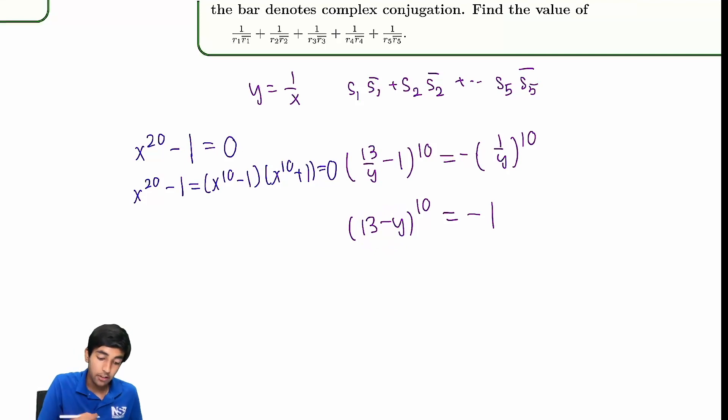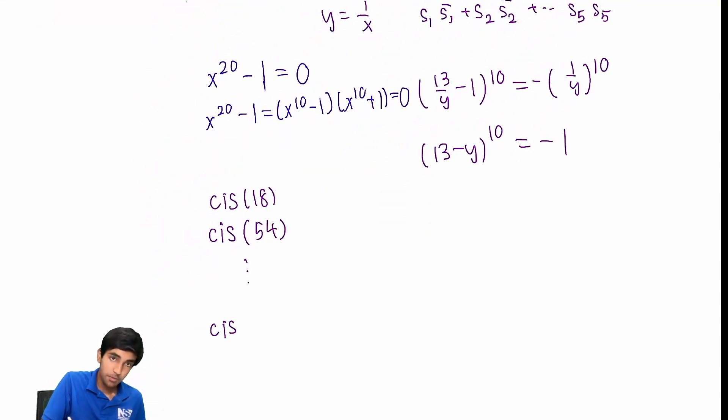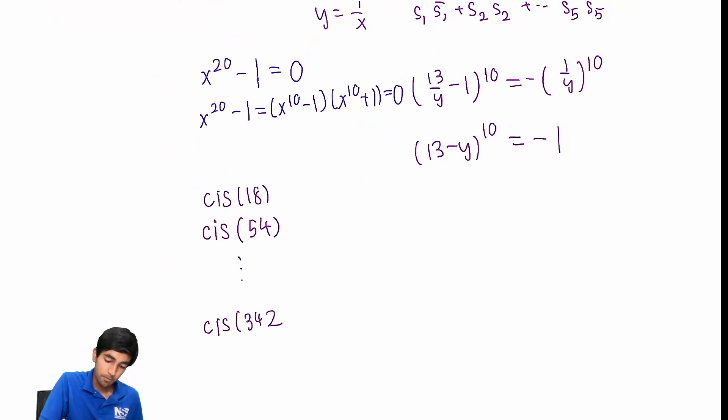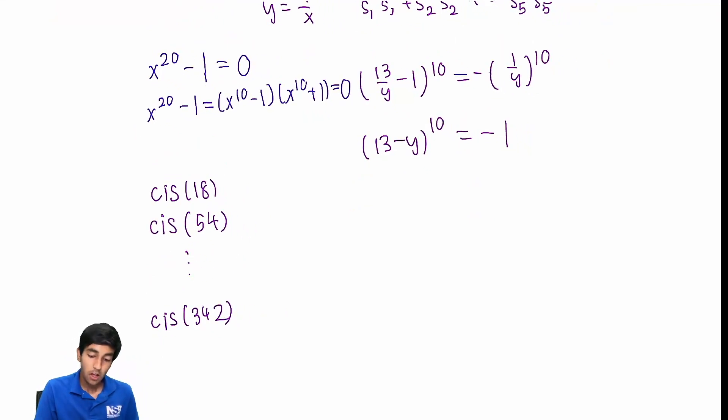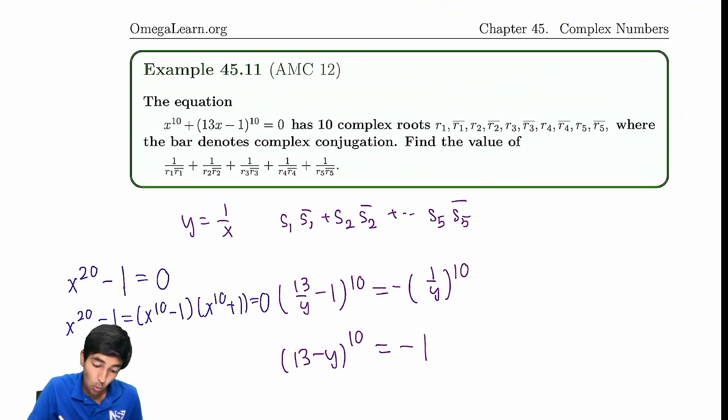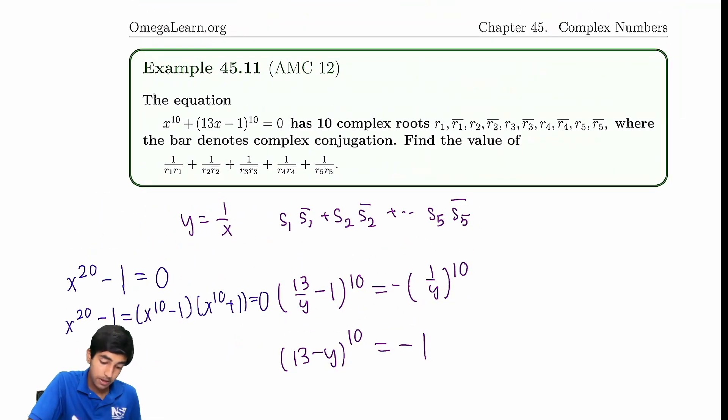Because those are the remaining roots for x to the 10th plus 1. And in this case, our x is just 13 minus y. So, what are all those values? Those are cis of 18. Cis of 18. Cis of, what is the other value? Because we're looking at 54, all the way until cis of 342. And in total, you can count if you want. There's going to be 10 of these.